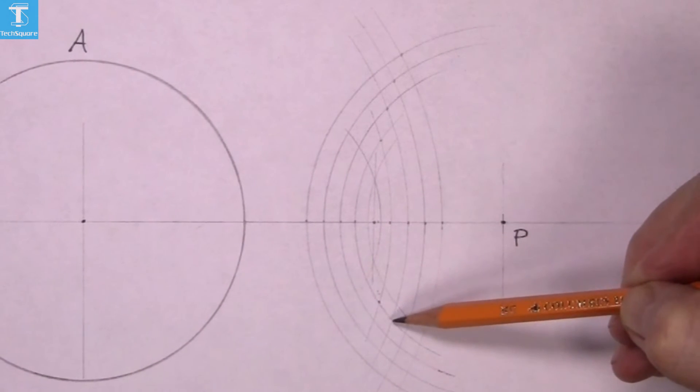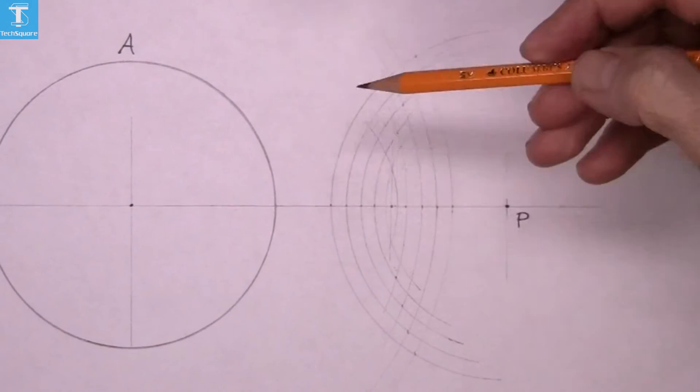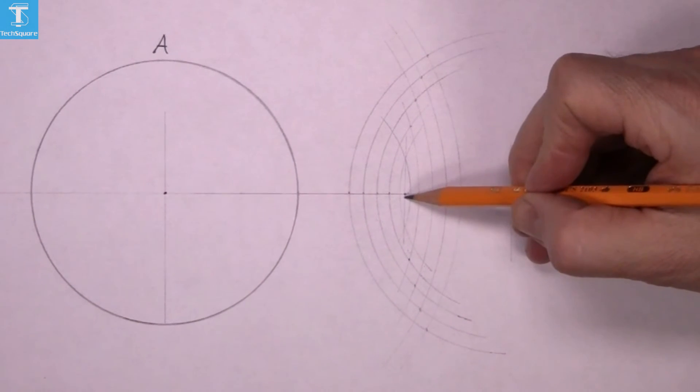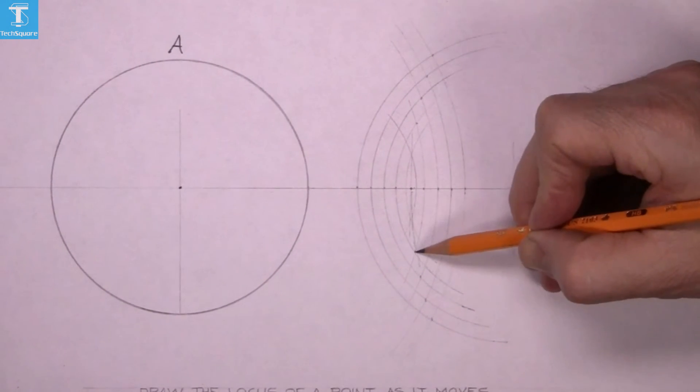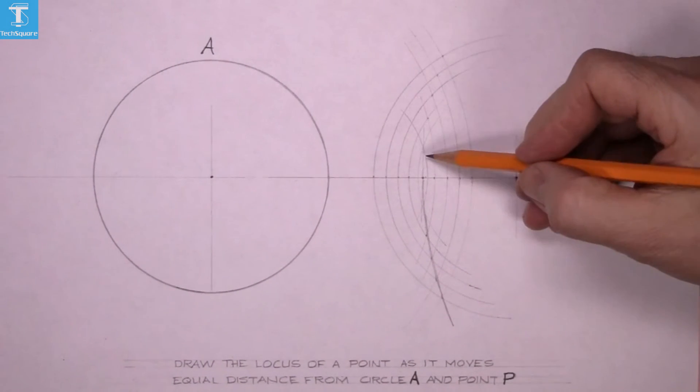Now down at the bottom mark the points here again. And then it's a freehand curve through these points. So I have to do it freehand because it's not a straight line.